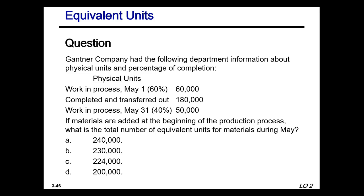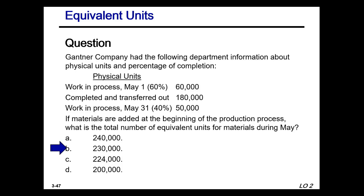Gantor Company: WIP beginning, completed and transferred out at 180,000, and WIP at end of period at 50,000 units. If materials are added at the beginning of the production process, what is the total number of equivalent units for materials during May? Since all materials get added at the very beginning of the process, we have 180,000 transferred out + 50,000 in WIP = 230,000 equivalent units for materials in May.